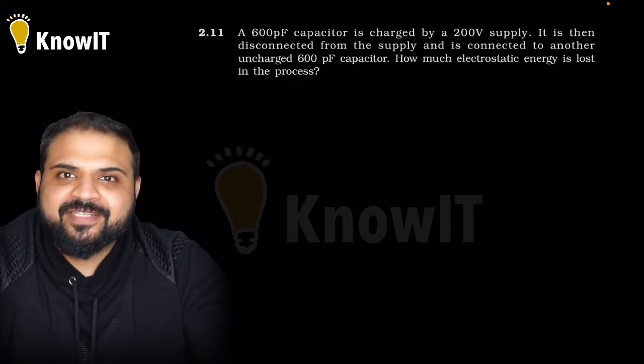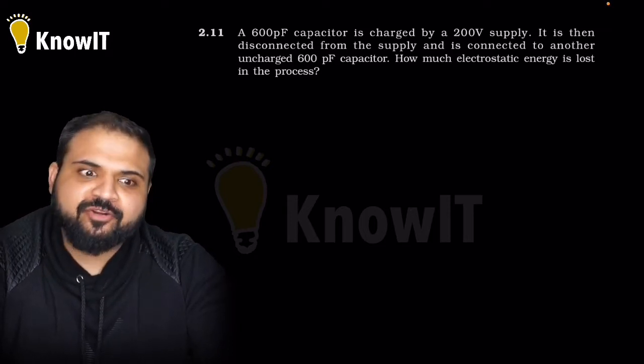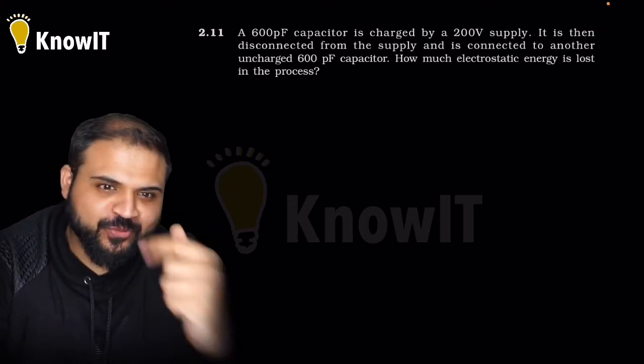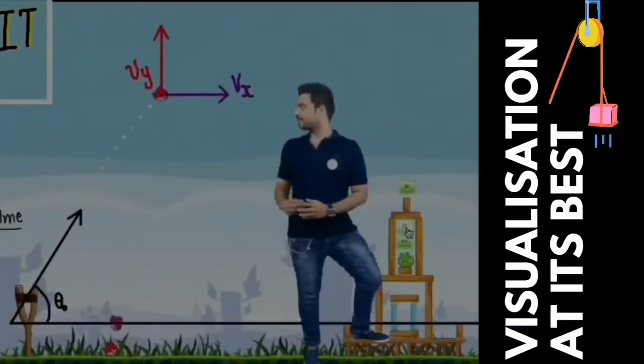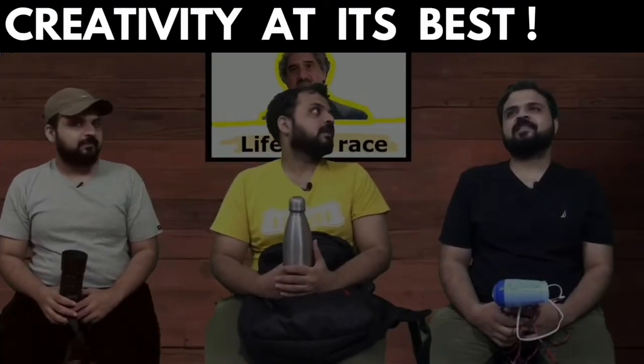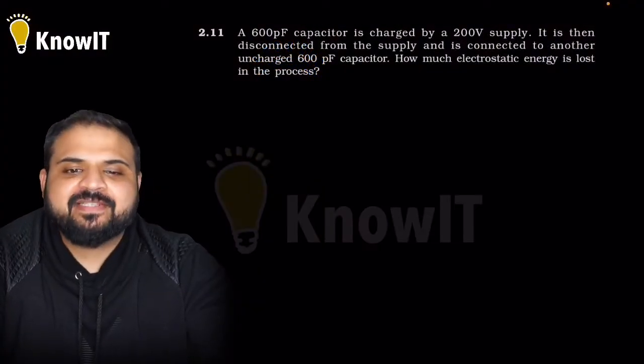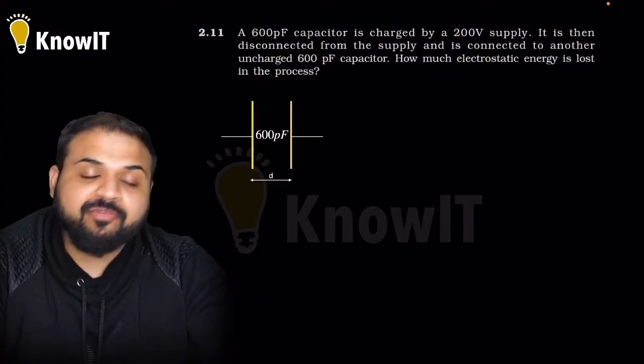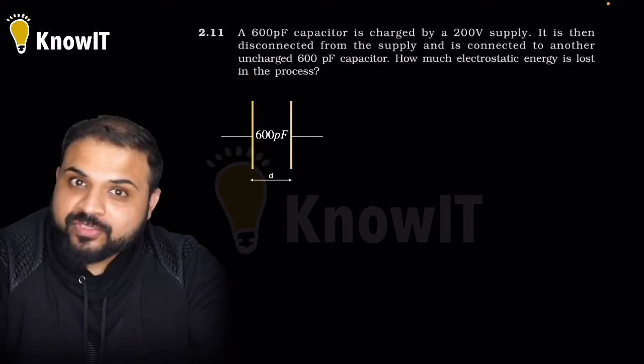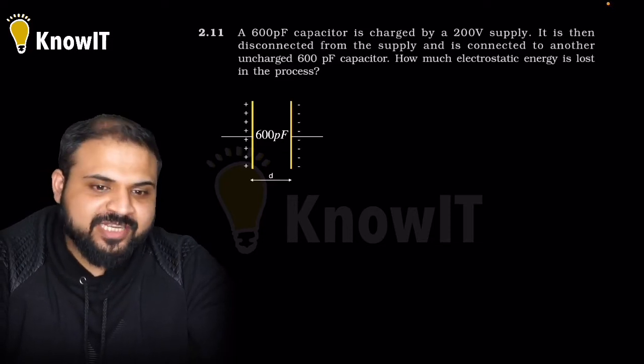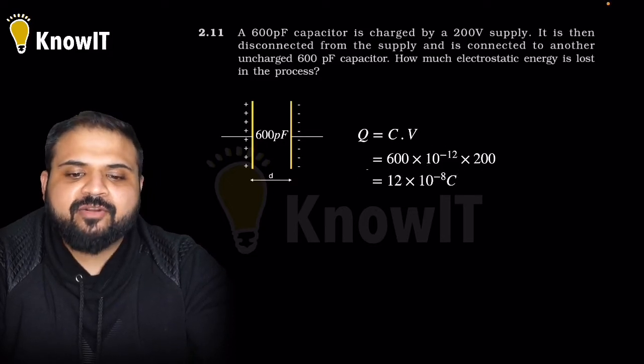Hello dear students, I hope you all are doing good. We are continuing our NCERT series for chapter 2 on electrostatics. We are on question number 2.11. A 600 picofarad capacitor is charged by a 200 volt battery. Picofarad is 10 power minus 12 farad. Let us calculate how much charge will come. Q equals to CV, so that turns out to be 12 into 10 power minus 8 coulomb.